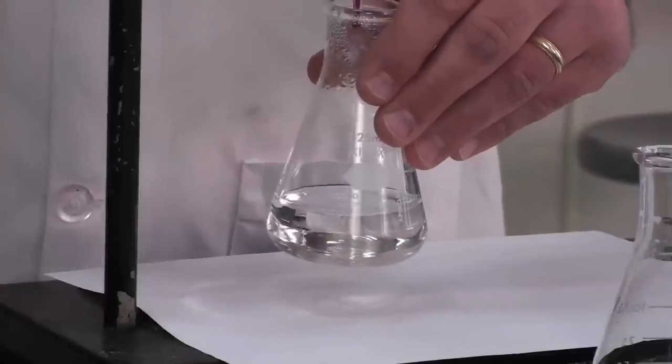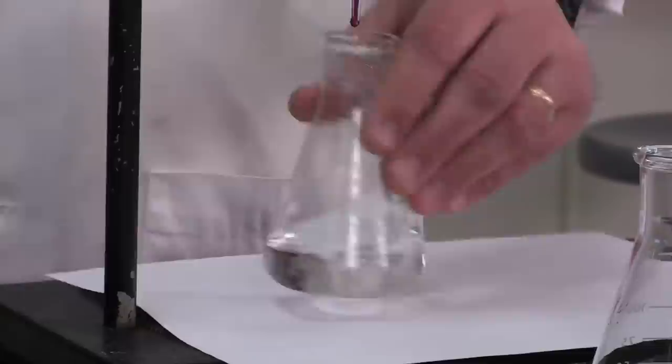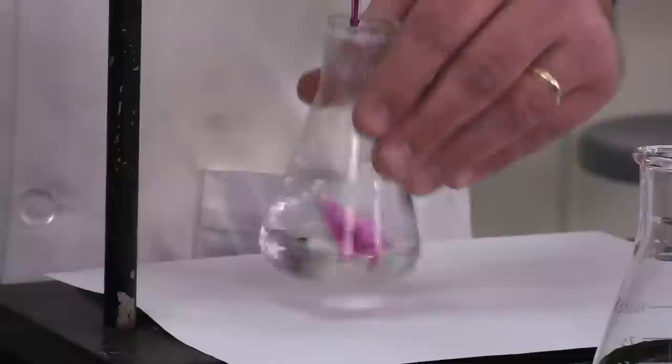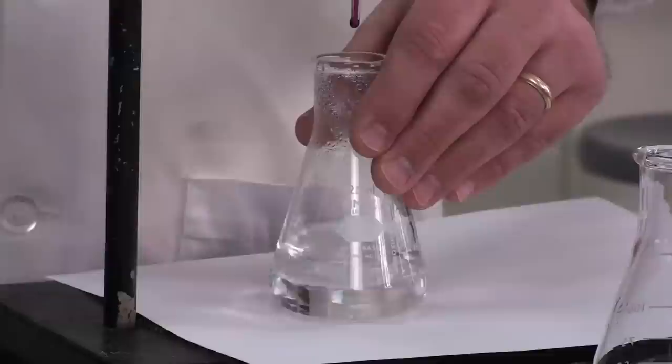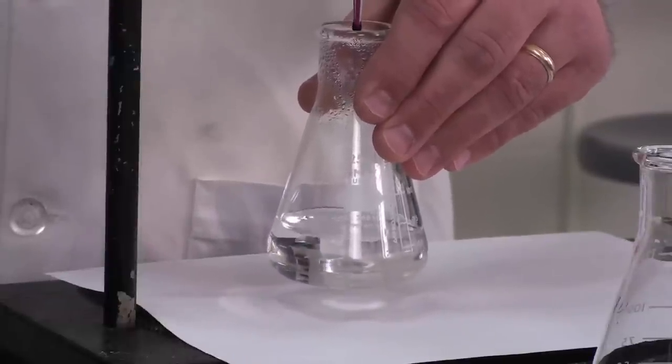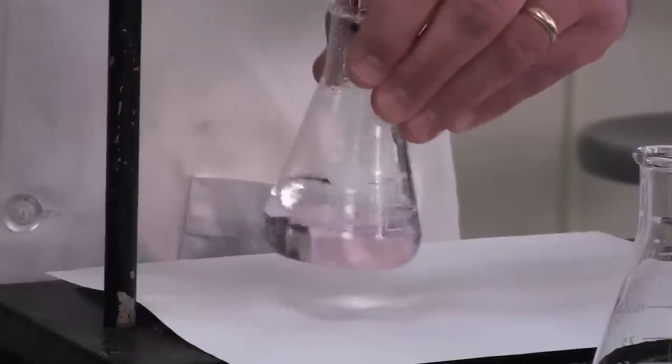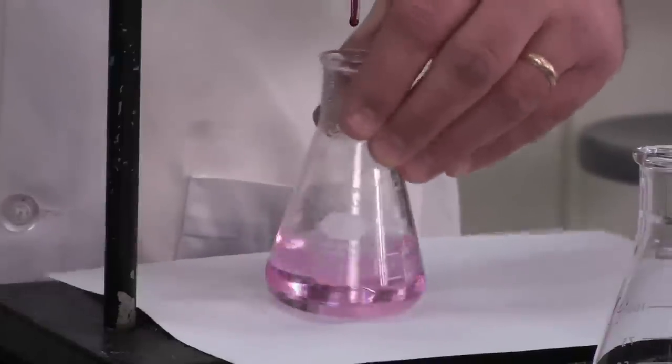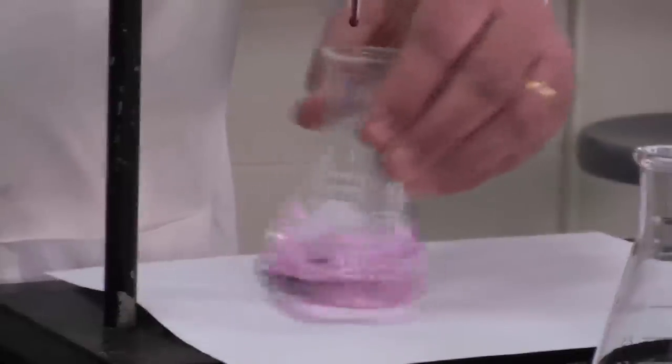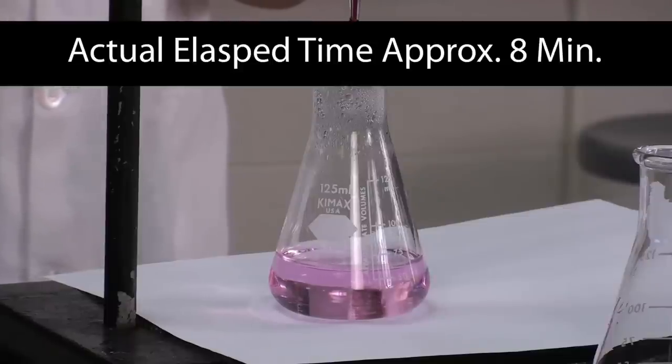We're looking for a persistent pink-purple color where we define persistent as lasting longer than about 30 seconds. And that should happen with a single drop, so we just have to patiently look for that drop. And there it is—there is our persistent pink color. So we have reached the endpoint of our titration.